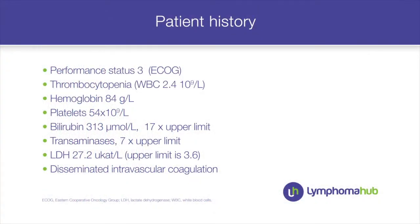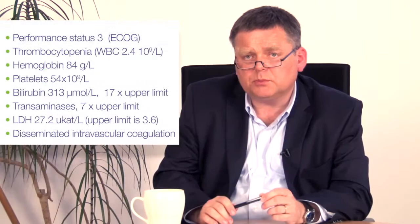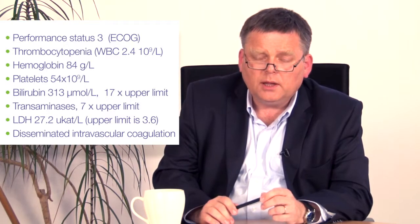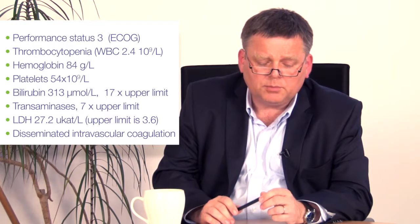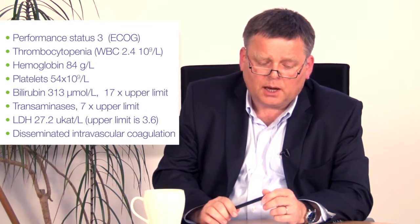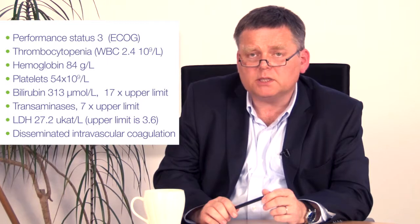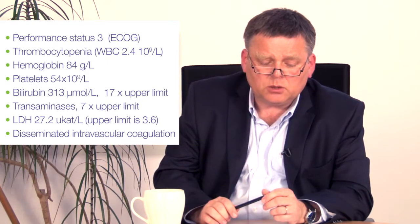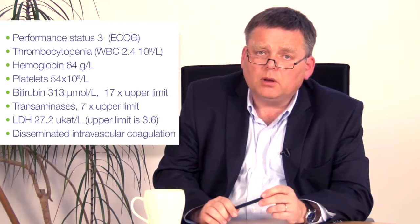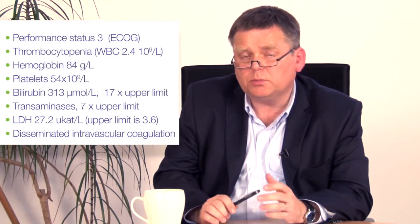They found early on that the cause was probably a large lymphadenomegaly in the retroperitoneum, and the patient was transferred to us. On admission, he was performance status 3 (WHO). He had pancytopenia with hemoglobin 84, platelets 54, bilirubin almost 20 times the upper limit, and elevated transaminases. LDH was 27 against a lab limit of 3.6.